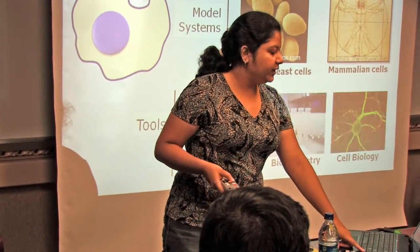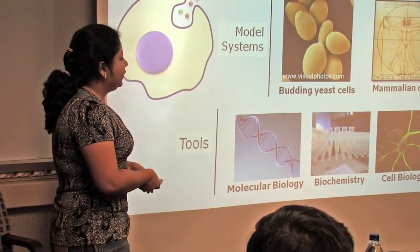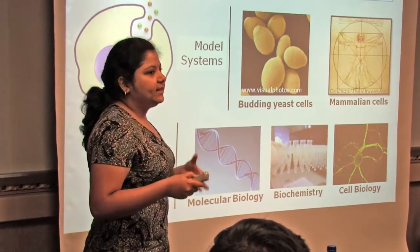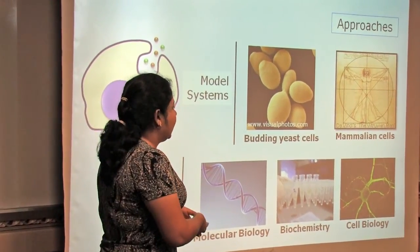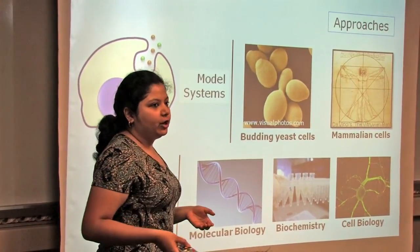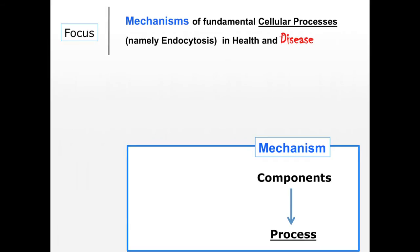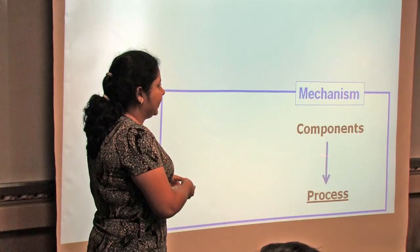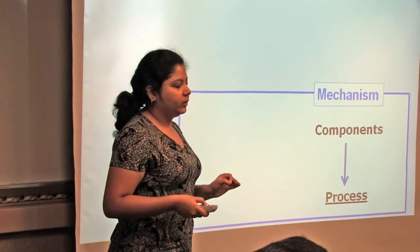What tools do we use? We do a lot of genetics. We do a lot of biochemistry to understand interactions between different proteins. And we also do a lot of cell biology, where we directly look at cells. In order to understand a mechanism, it is important to understand what the components do, and once we understand the components, we can understand how the process works.